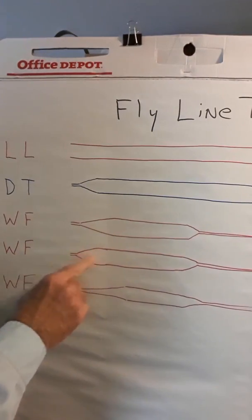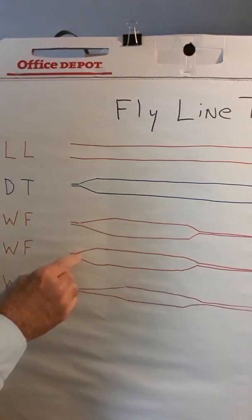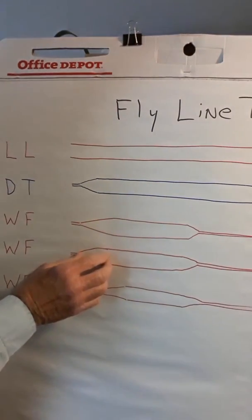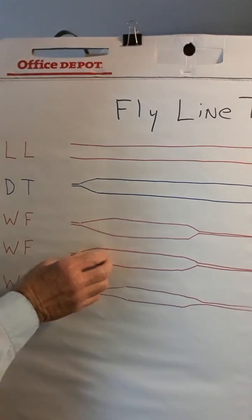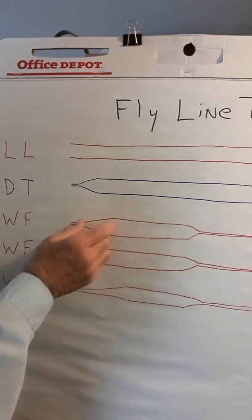So this fly line will retain its energy all the way to the butt section. The benefit of this is that when you're turning over big fly lines versus big bass bugs versus smaller midges or smaller flies.